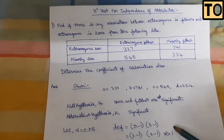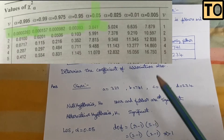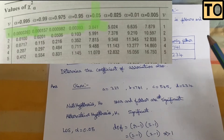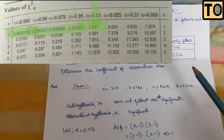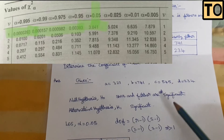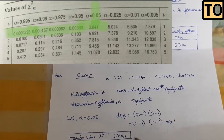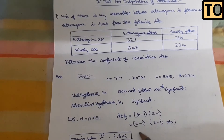Looking up the chi-square table at degrees of freedom = 1 and significance level 0.05, the table value is 3.841.